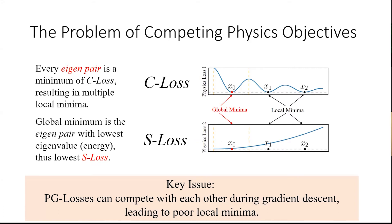There is a problem in this two loss function settings. The two laws can compete with each other in our observations. The C loss, the eigenvalue eigen equation, might have many eigenpairs that all of them can satisfy the C loss to get the zero value out of the C loss, but we're only interested in the lowest energy one. The key idea is here, PG loss can sometimes compete with each other leading to poor local minima.